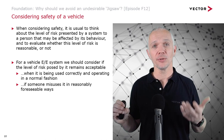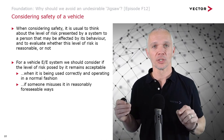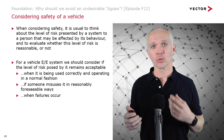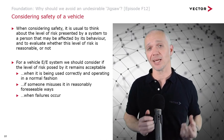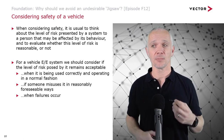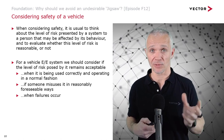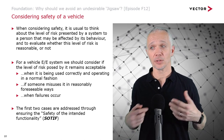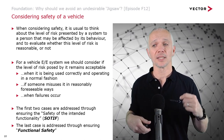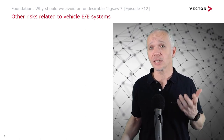We should also consider whether risk remains acceptable if someone misuses the system in a reasonably foreseeable way — for example, taping down a switch to keep it in a certain position. And we should ensure the level of risk posed by an electrical system remains acceptable when a failure occurs, such as when a sensor, actuator, or ECU develops a fault. The first two cases — normal correct use and misuse — are addressed through SOTIF, Safety of the Intended Functionality. The last case is addressed through functional safety.